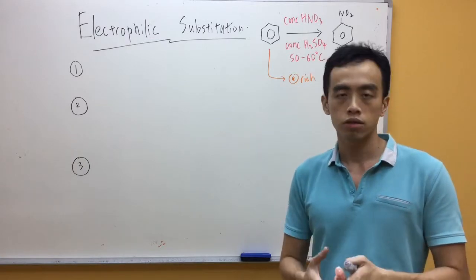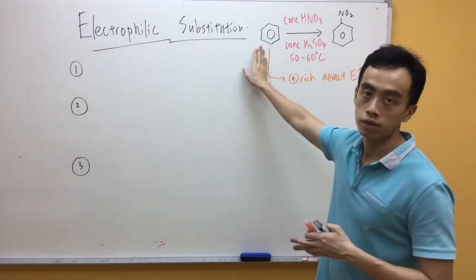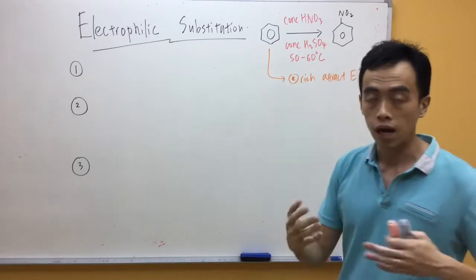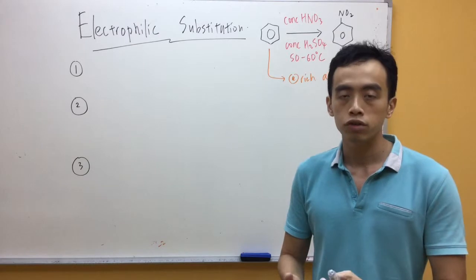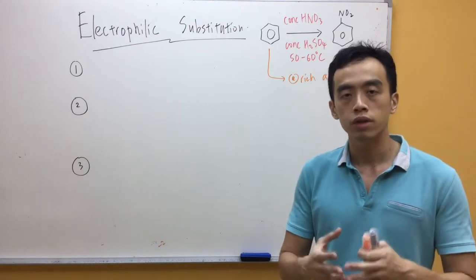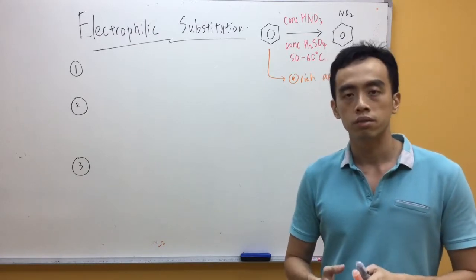Now, benzene itself is highly unsaturated. The formula is just C6H6, so it has a high degree of unsaturation. But it prefers substitution instead of addition reaction because it wants to retain the resonance stability.